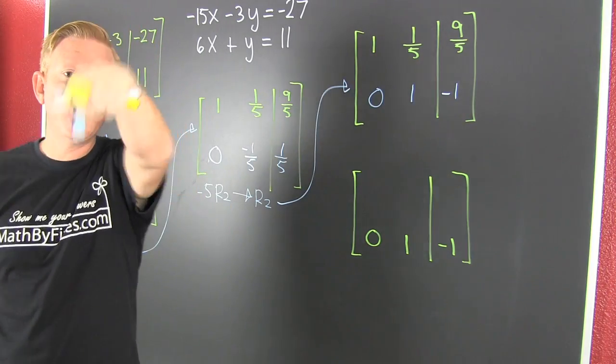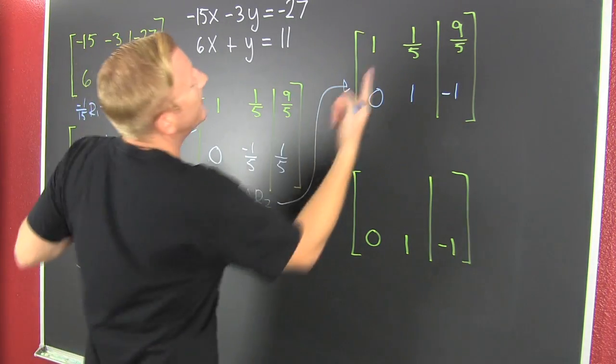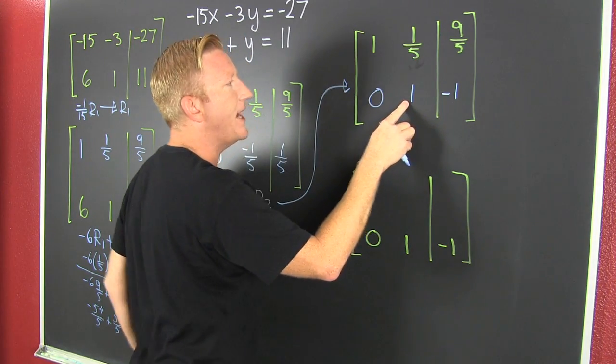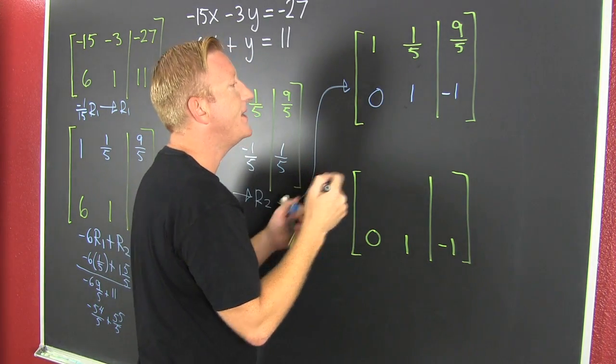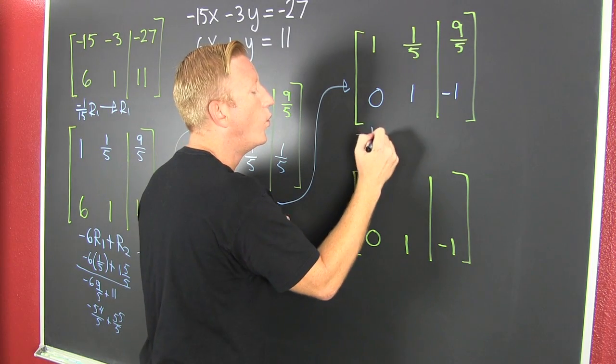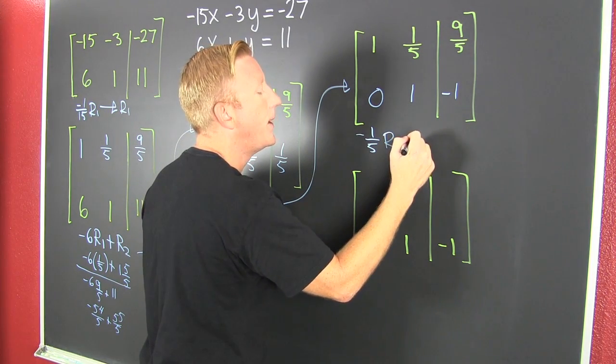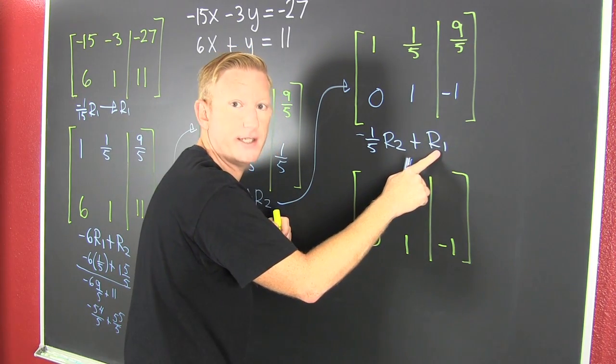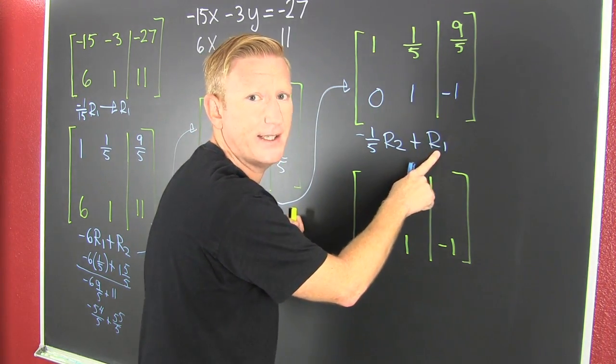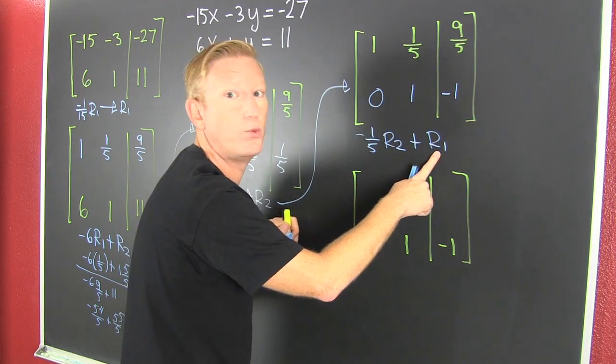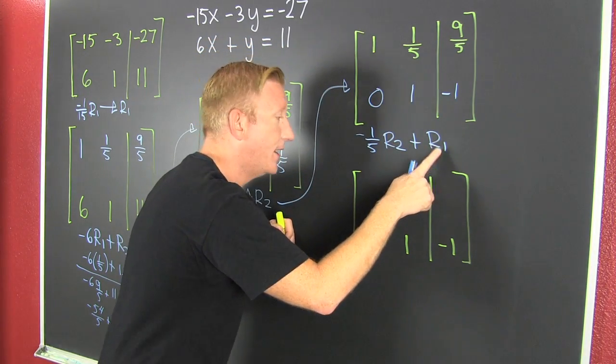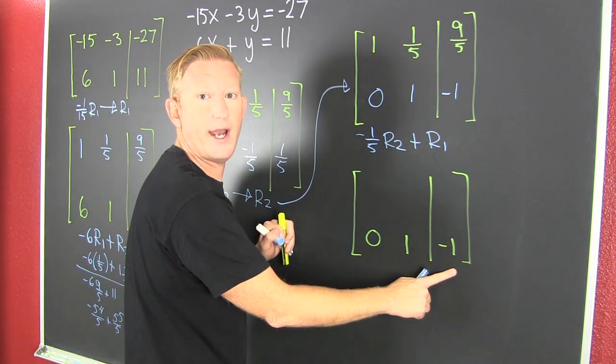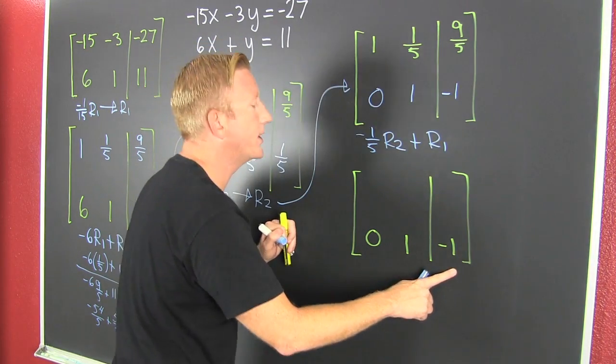And then now what? Now that we got that 1, we need to go and we need to kill that 1/5. To kill that 1/5, we multiply that by the additive inverse of 1/5. And that's minus 1/5 row 2 plus row 1. Again, the only row that's changing from matrices to matrices is the back 1. And until you're a professional, only change one row at a time. So we're using row 2. Rewrite it.